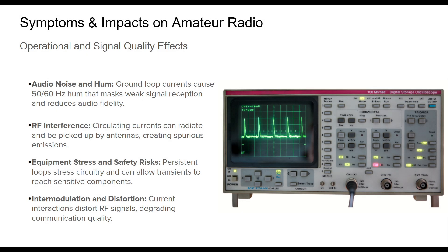The symptoms of ground loops in ham radio setups are often unmistakable and problematic. A low-frequency hum, typically 50 or 60 hertz, is a classic indicator, especially in audio lines. This noise can drown out weak signals, making intelligible reception difficult. Beyond hum, ground loops contribute to RF interference by forming inadvertent antennas through interconnected cables and chassis. This can raise the noise floor and allow noise to enter the signal chain at various stages. Persistent ground currents can overstress equipment, creating erratic behaviors or even component failures. These loops may also carry high-voltage transients during surges, presenting safety risks, and interact with RF signals to create intermodulation distortion, a threat to signal purity.